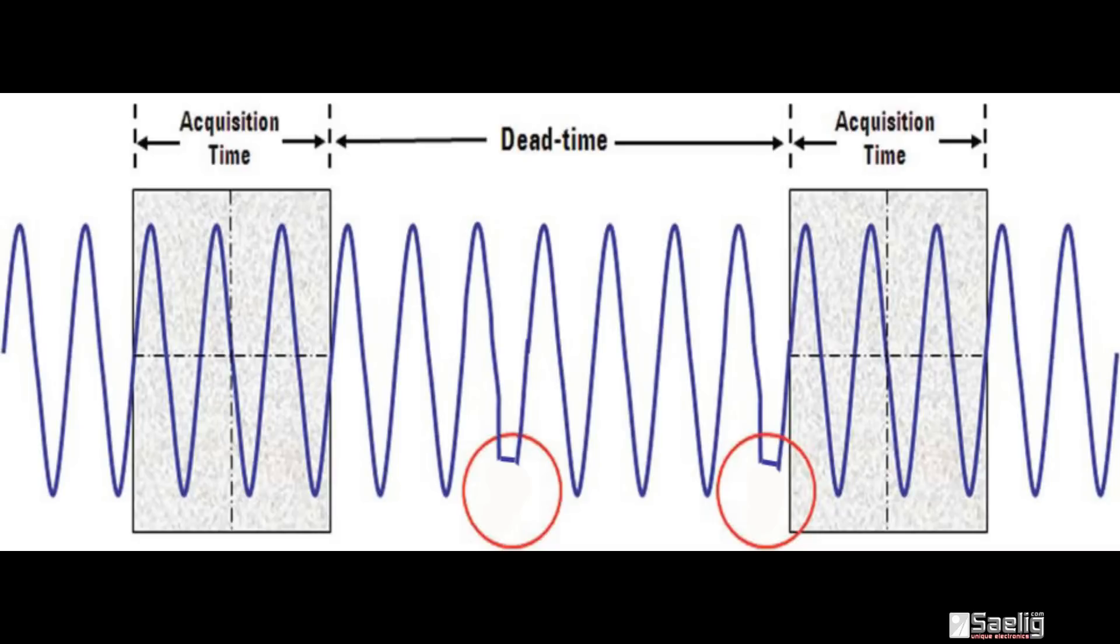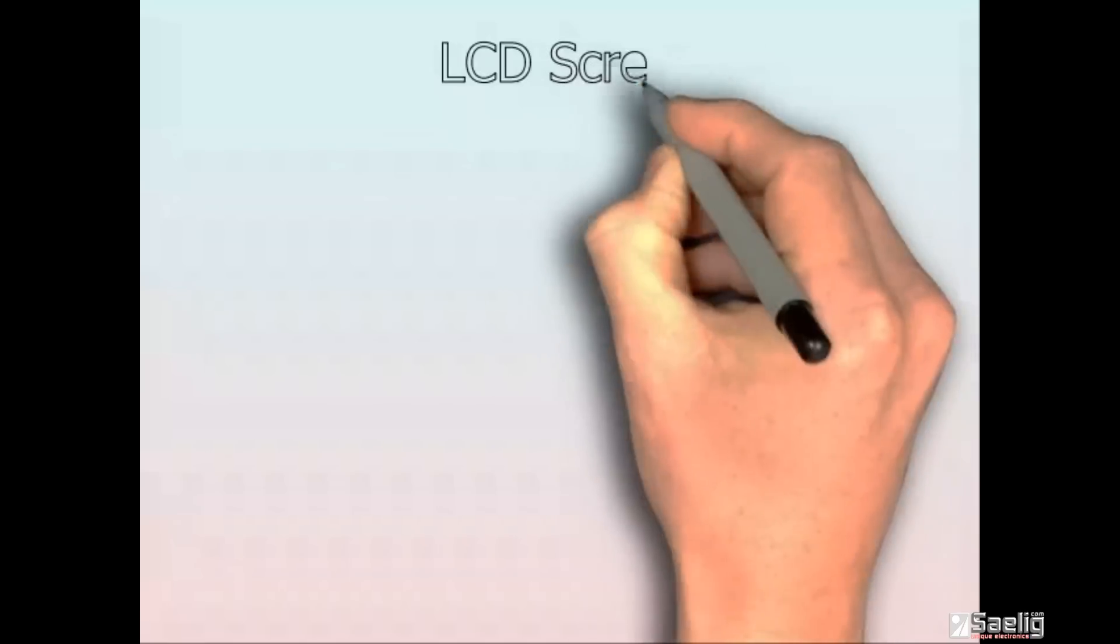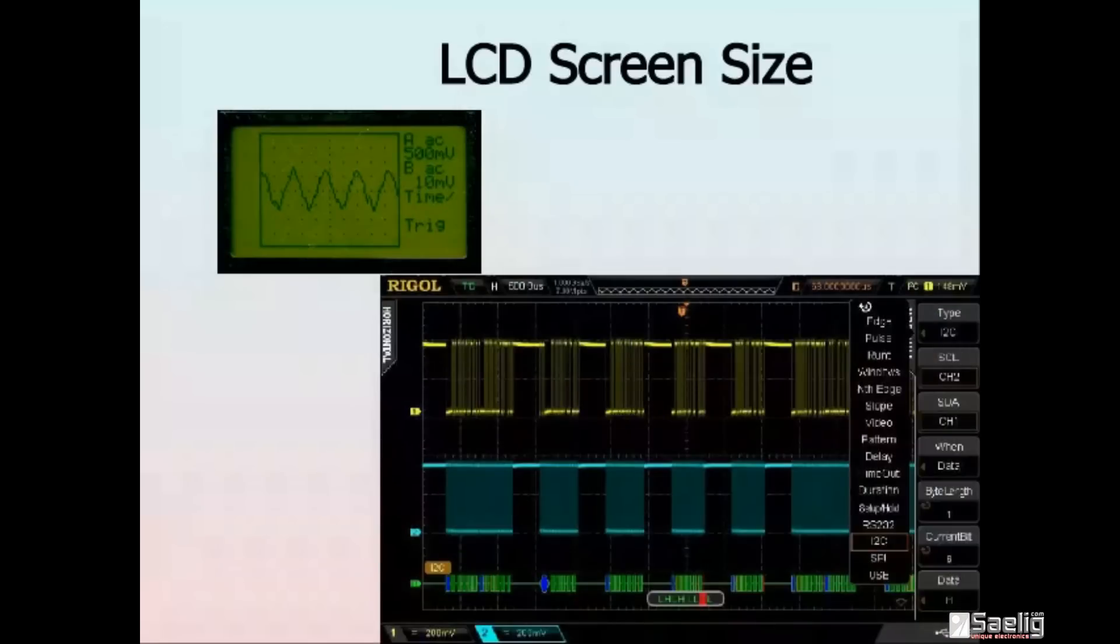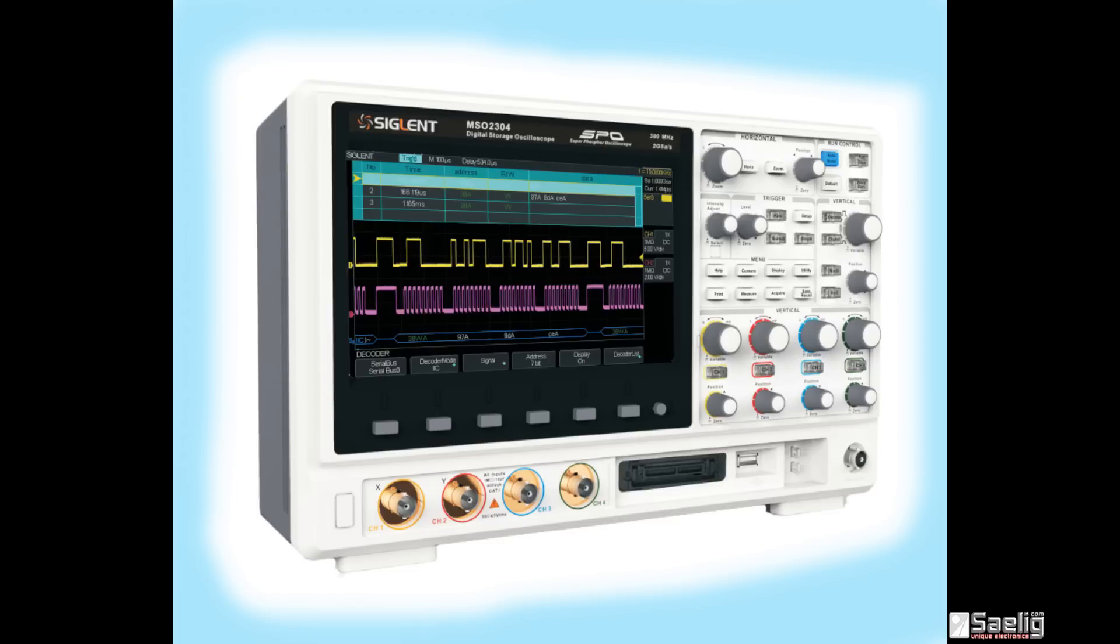And take a look at the LCD screen size and quality. Sizes vary greatly and some LCDs are still monochrome in older designs. Color helps in sorting out which trace is which, and the better resolution, the more information you can gather.